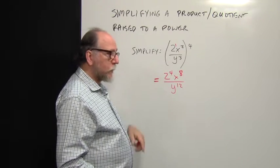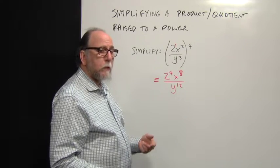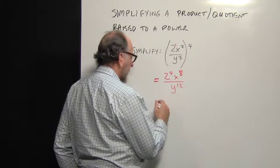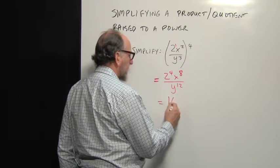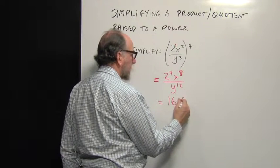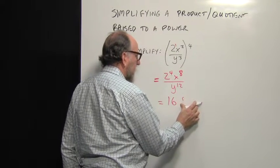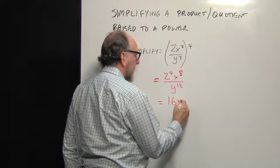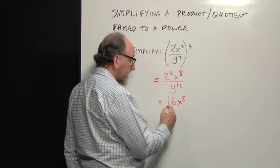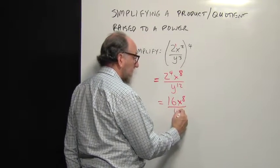But two to the fourth can be simplified. What is two times two times two times two? Well, each pair of twos makes four, and four times four is sixteen. So the final answer is sixteen x to the eighth power over y to the twelfth power.